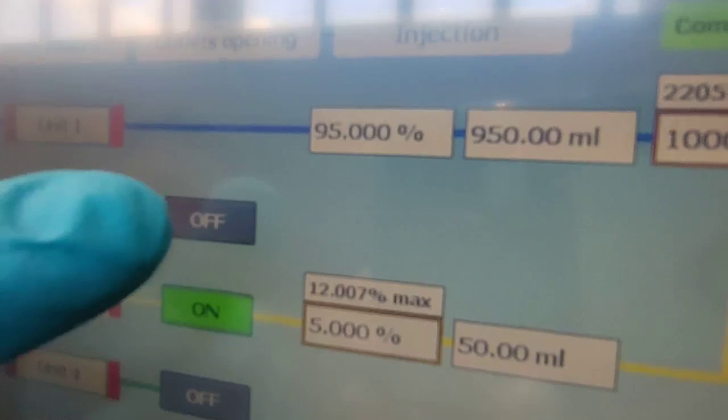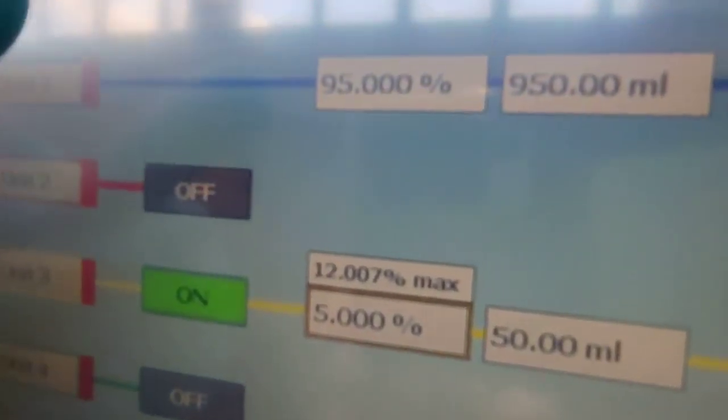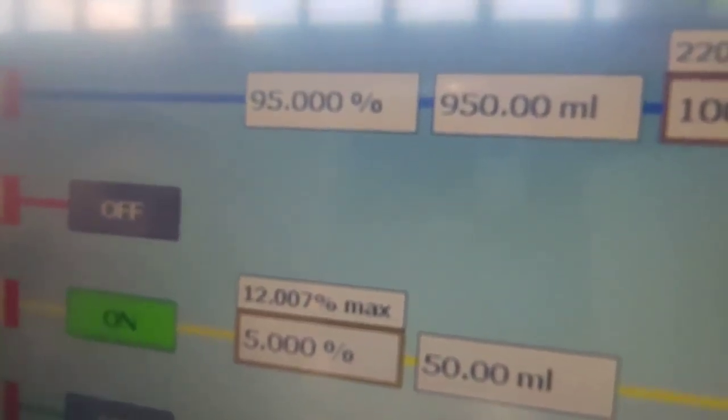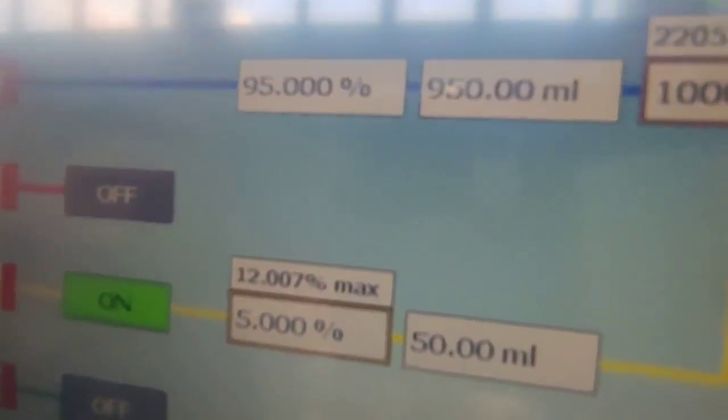As the additive unit percentage is set to five percent, the main dosing unit is going to dose 95 percent which corresponds to 950 ml, while the additive unit doses 50 ml.